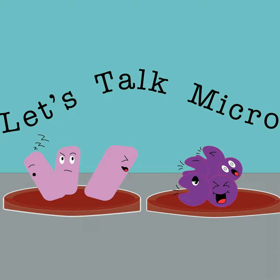We also talked about the difference between gram positive and gram negative. Gram positive bacteria have a thicker cell wall — a thick peptidoglycan wall — and that makes them retain the first stain, the first dye, which is purple. Gram negative bacteria have thinner walls, so the first dye washes away when you decolorize, and you end up retaining your last stain which is the safranin — that's your pink — and that's the difference between gram positive and gram negative bacteria.